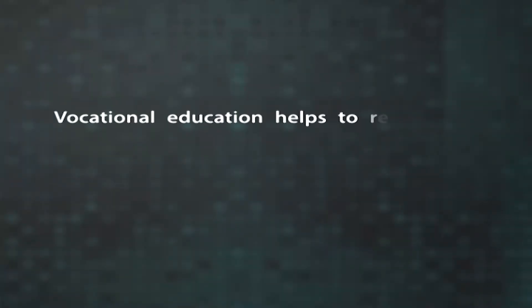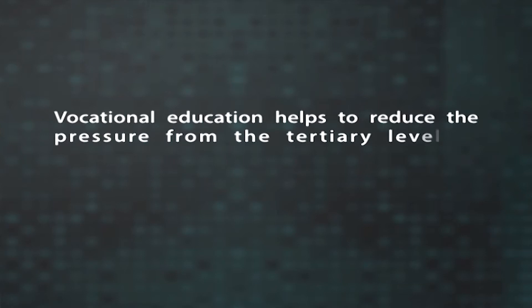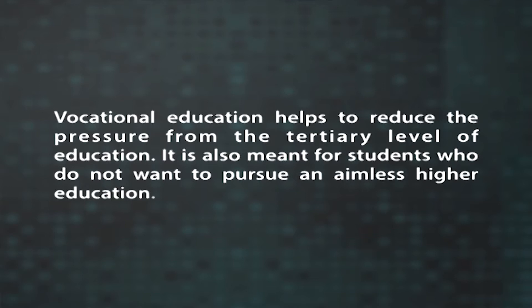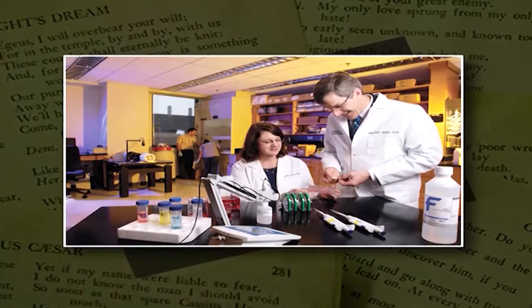Vocational education helps to reduce the pressure from the tertiary level of education and is meant for students who do not want to pursue an aimless higher education. The design of the curriculum consists of theory and practice relating to vocational fields. All over India, more than 150 courses are taught in different schools. The courses are grouped under major areas of agriculture, engineering and technology, fisheries, health and paramedical, business and commerce, home science and humanities. The courses are meant to create marketable skills and semi-skills.